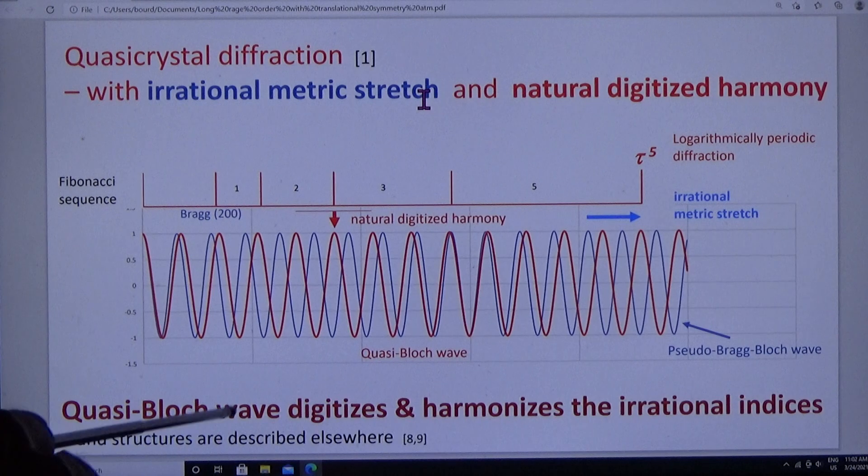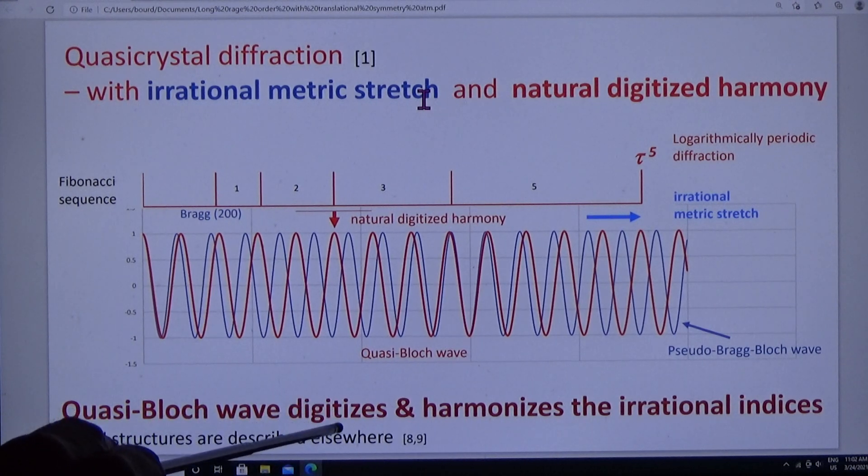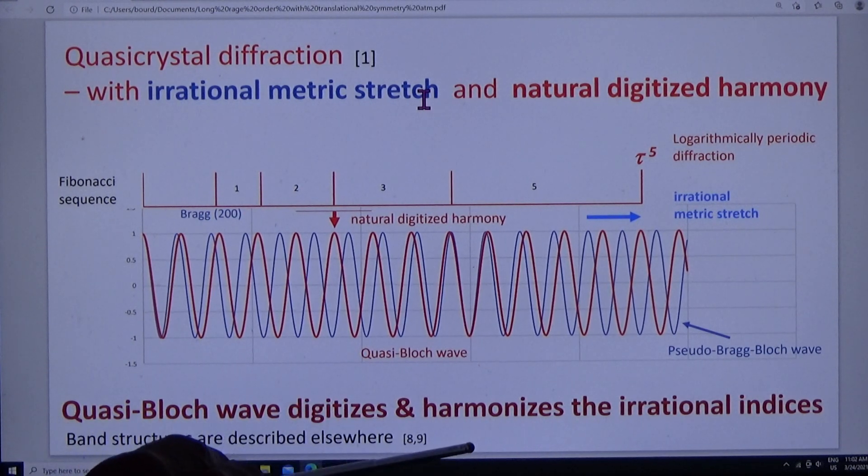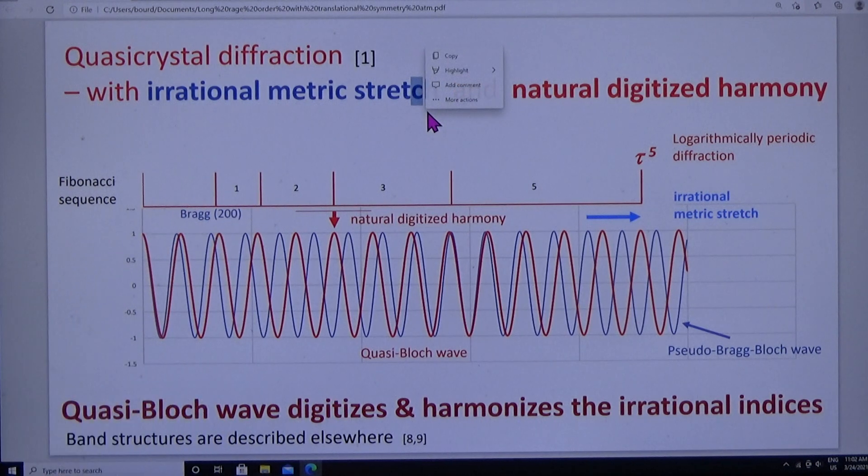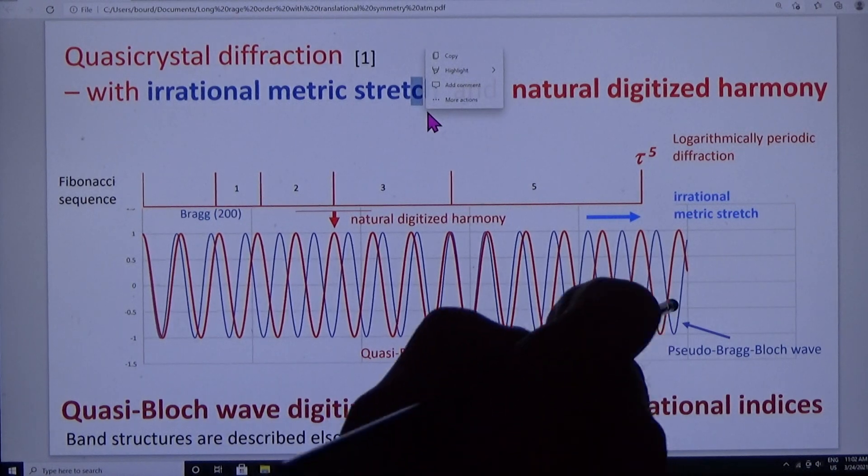It's the quasi-Bloch wave, as you can see, digitizes and harmonizes the irrational indices. And that's what we're looking at in quasi-Bragg diffraction.